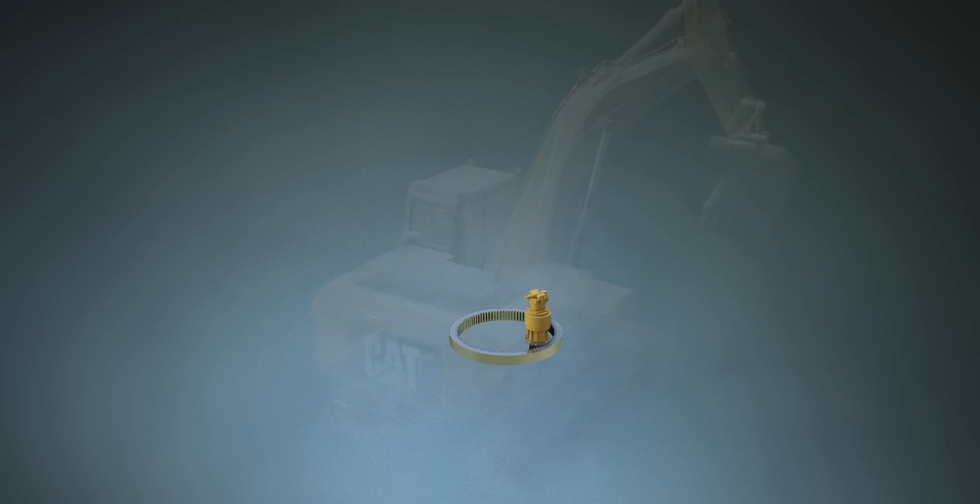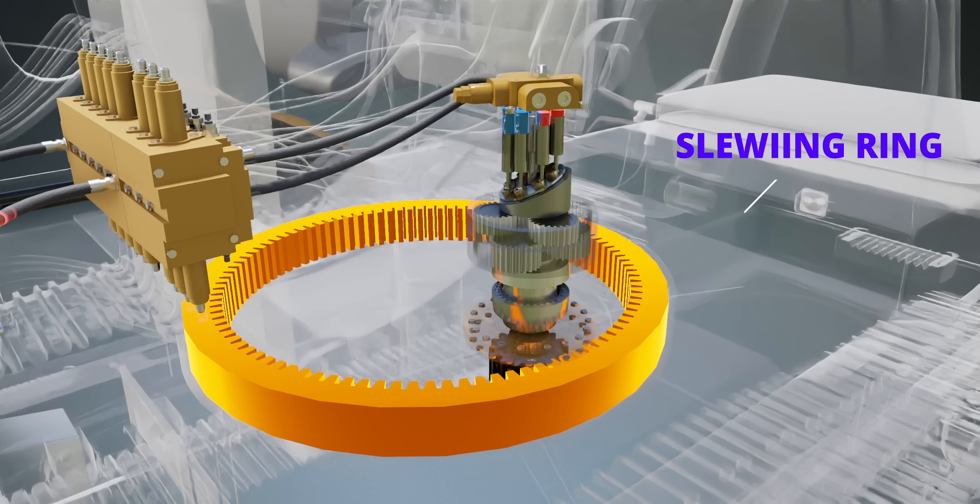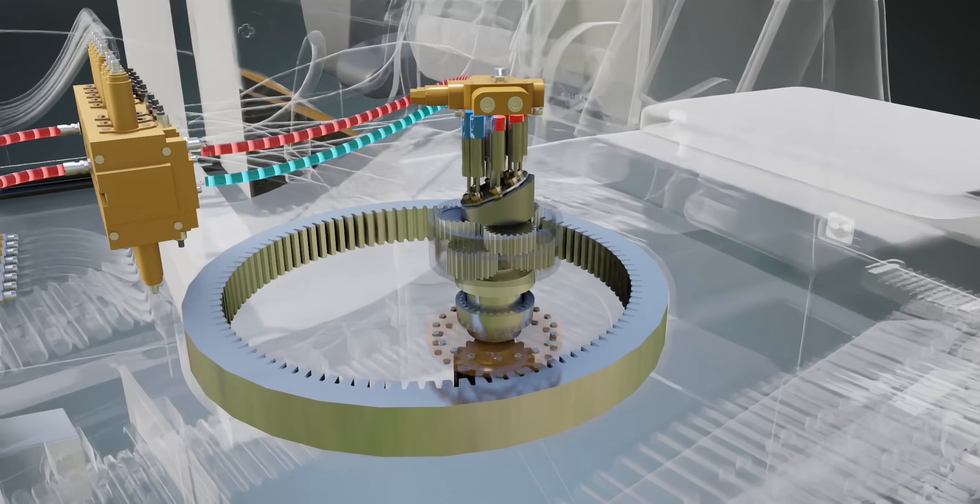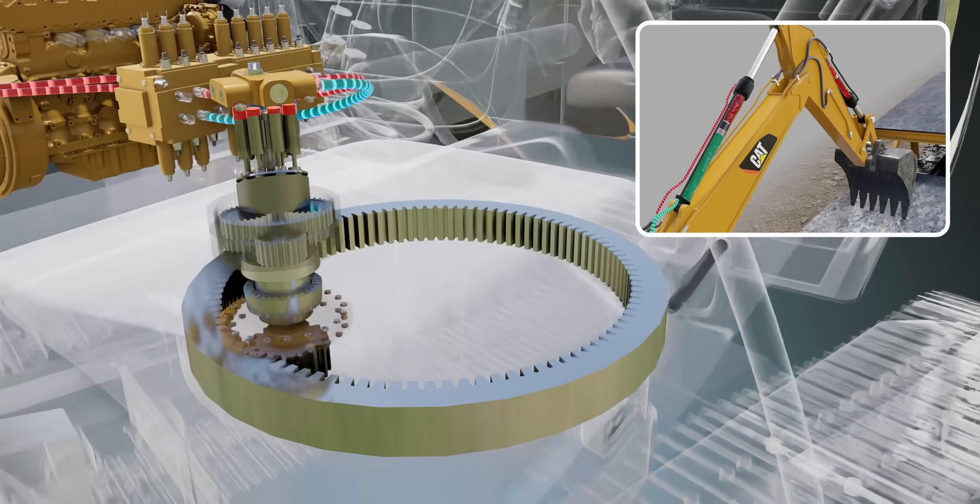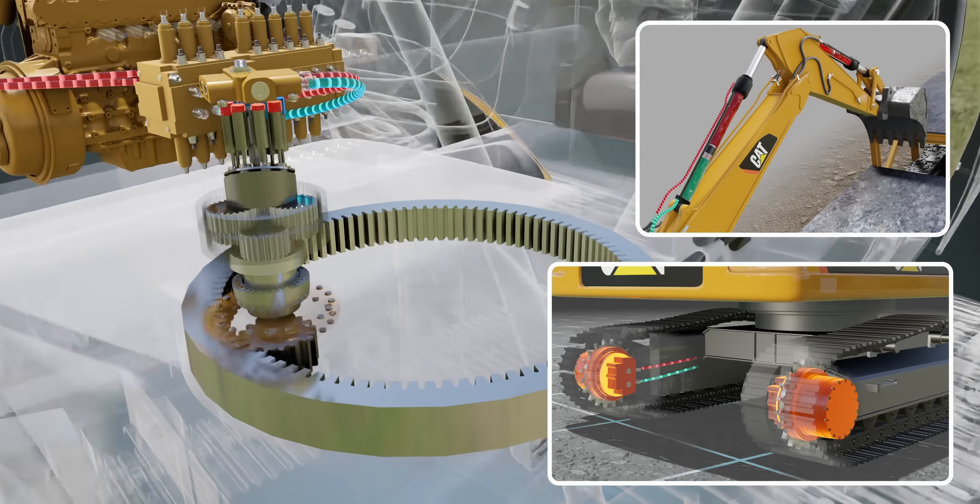The swing motor we saw earlier also runs with the help of a similar hydraulic motor. Here, in addition to the motor, there should be a big slewing ring as well. In short, an excavator needs high-pressure fluid for its arm operation, track rotation, and operating the swing motor.